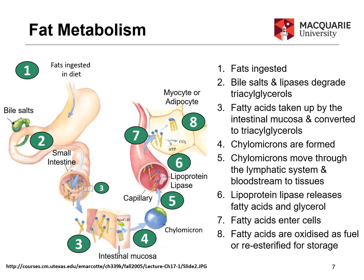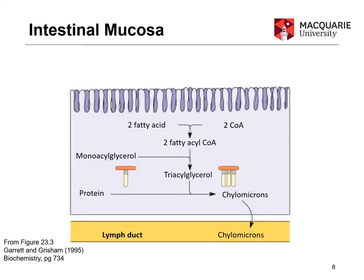At step three, the fatty acids are taken up by the intestinal mucosa and converted back to triacylglycerols. The two fatty acids plus the monoacylglyceride pass through the intestinal mucosa, and once that's done we reassemble them and package the result into what's called a chylomicron, which we'll look at in a moment.